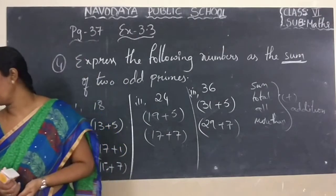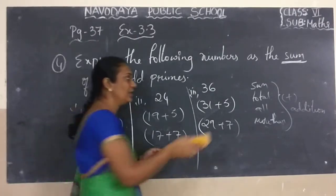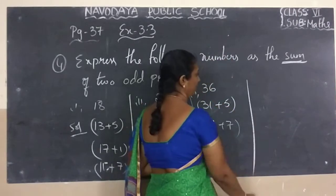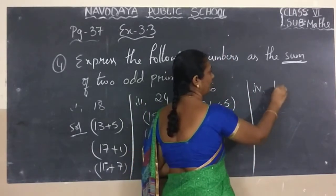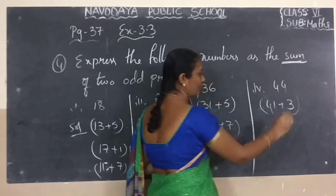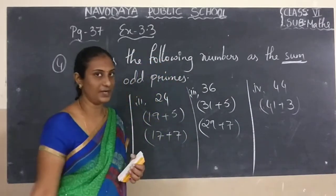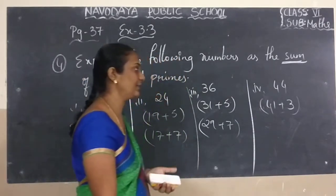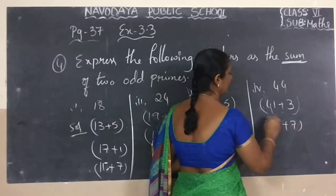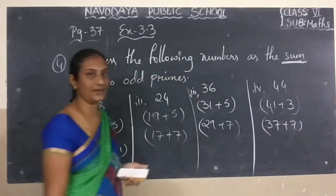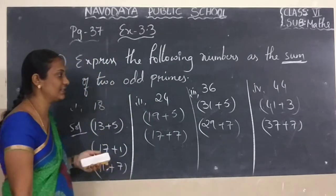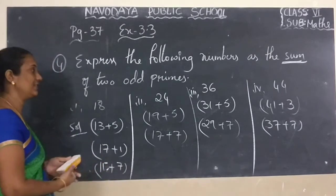You are having one more sum: 44. For 44, how we can write? 41 plus 3 — we can write. Next: 37 plus 7. 37 is a prime number, 7 is a prime number. When you are adding these two numbers, we are getting 44. Okay children, do you understand the sum? Now we will see the next sum.